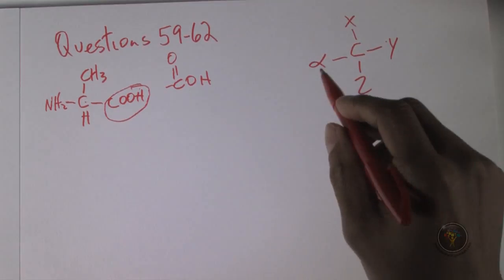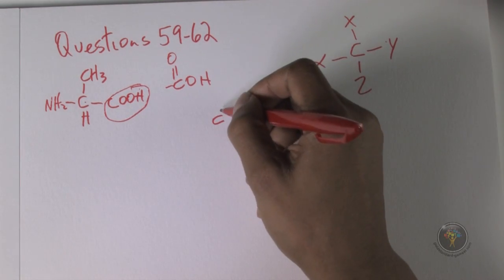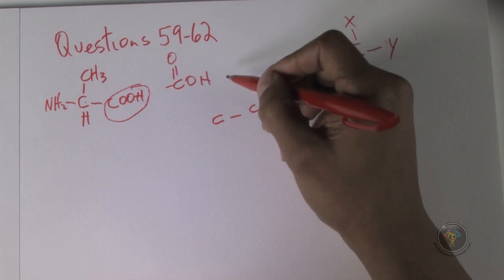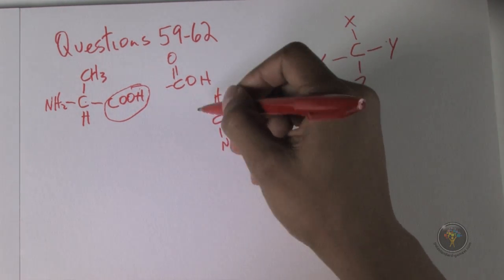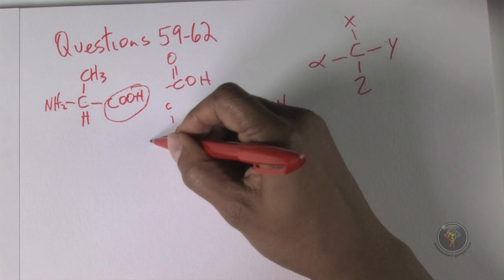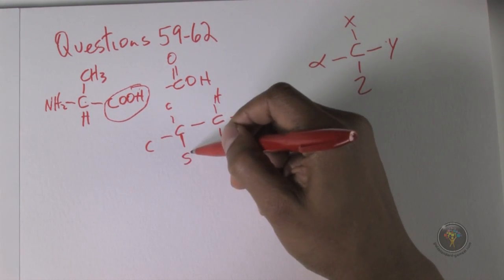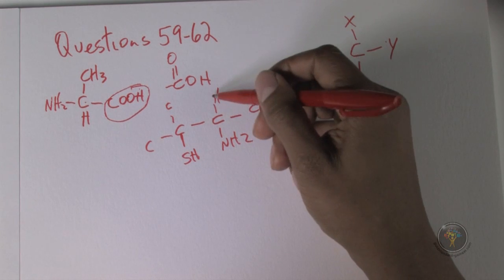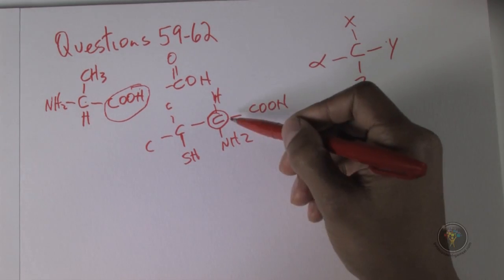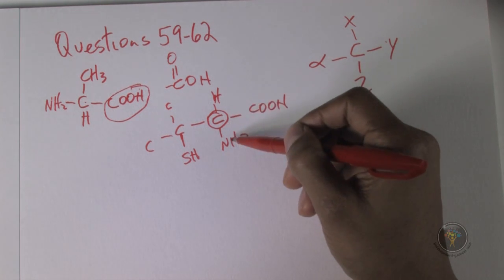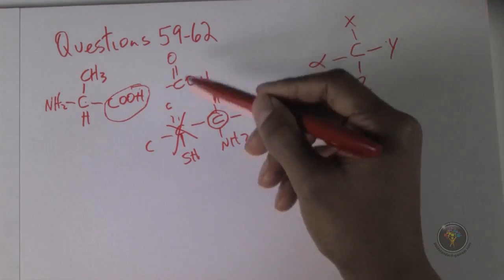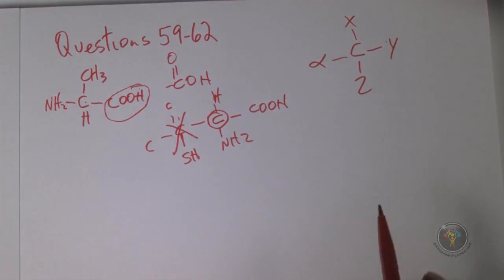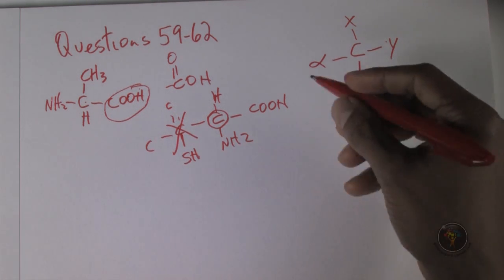In the second compound, you can see a COOH, a hydrogen, an amino group NH2, and a carbon with two methyl groups and a thiol group SH attached to it. So this central carbon is clearly chiral — bonded to four different things. The next carbon, however, is not chiral because it's bonded to a methyl group twice — two of the same thing.